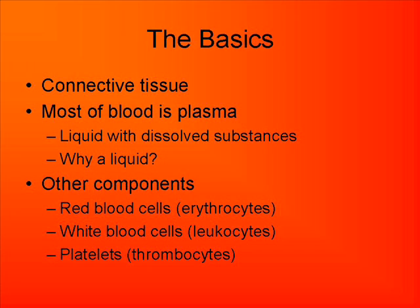Most of blood is plasma, which is a liquid that has a bunch of dissolved substances in it. It would be a liquid so it can flow through your body — blood has to be able to circulate, so it needs to be a liquid to flow.